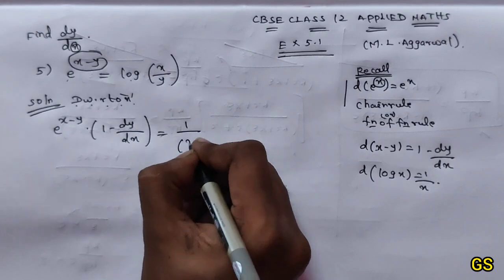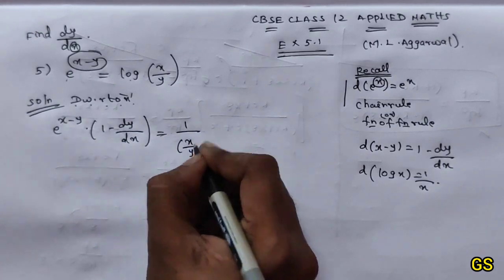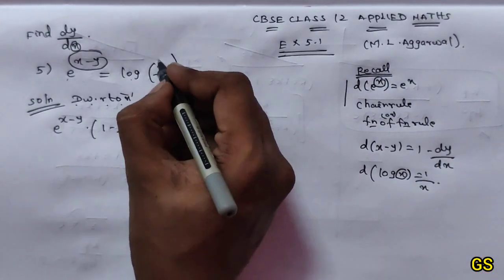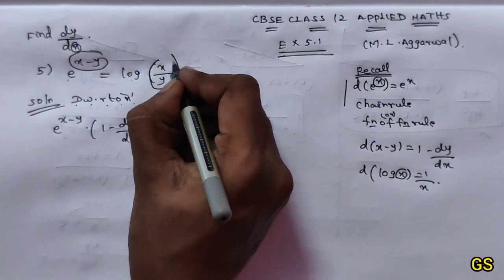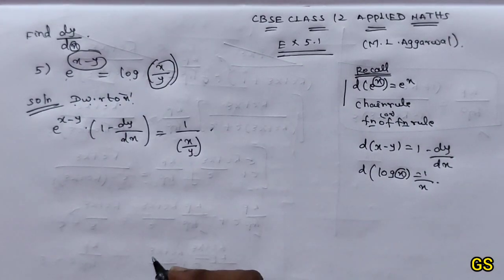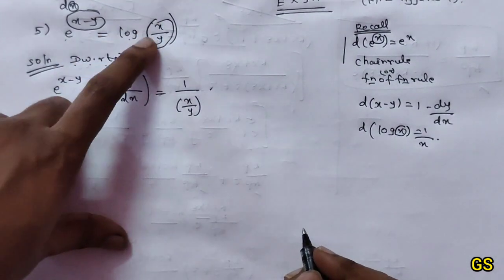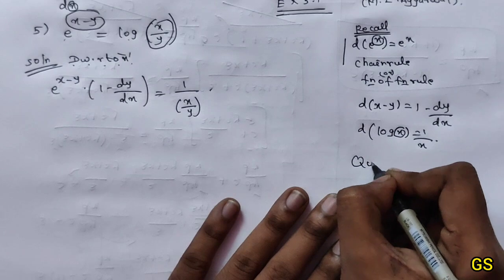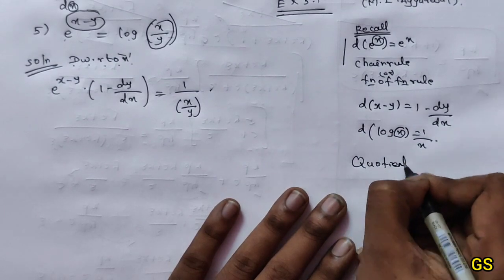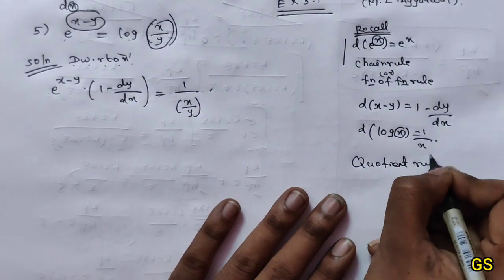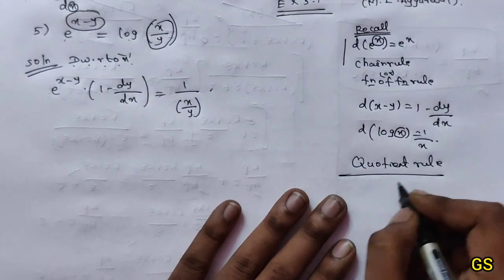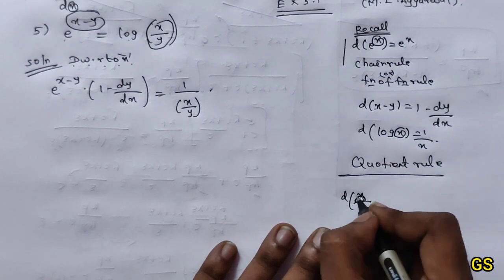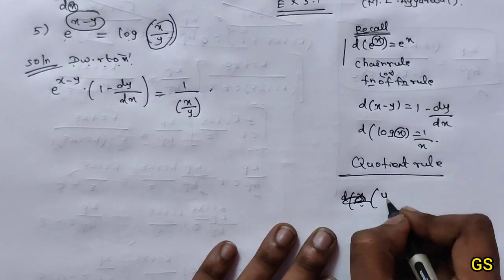So log x gives 1 by x. Now you have to differentiate log(x/y). Think of this as a function with a quotient inside, so use the quotient rule. Differentiation of x by y — differentiation of u by v whole dash.